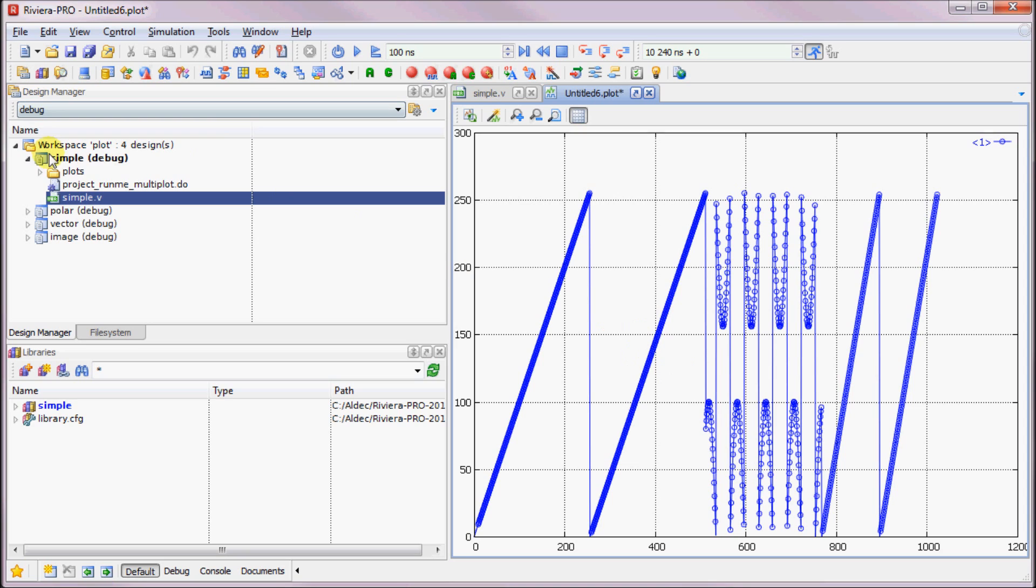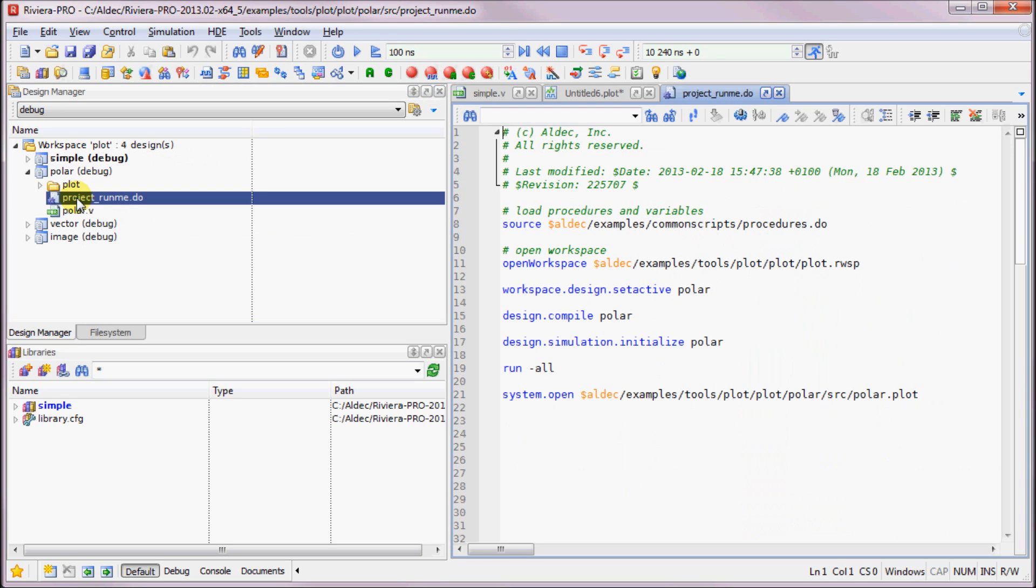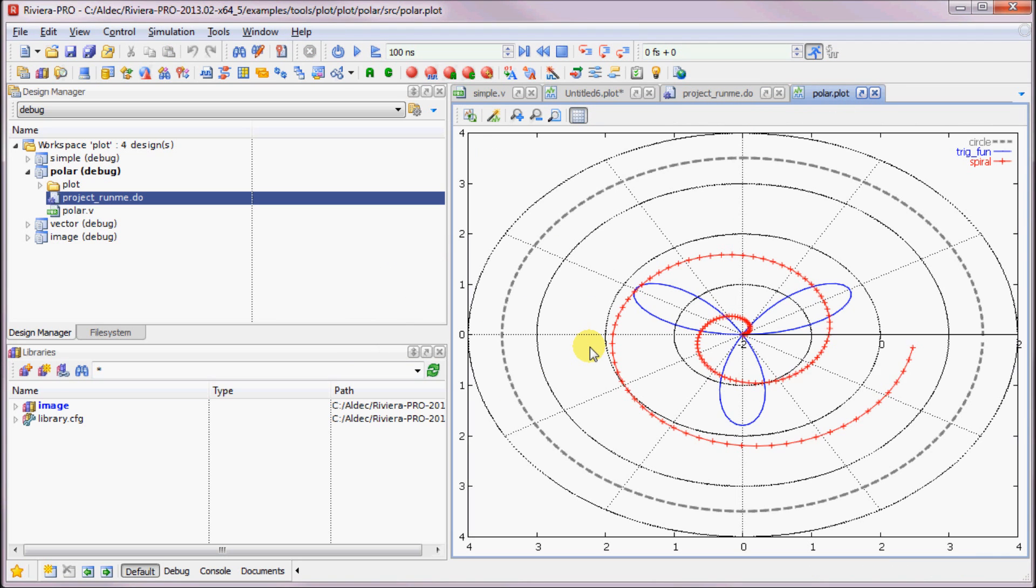Now let's run the other examples to see the other types of plots. The next one is the polar plot. Let us run the sample design which creates the polar plot. Here is the polar plot with the three arrays displayed at once. One array shows the beam intensities. The red plot shows a spiral function. The gray plot shows a circle.